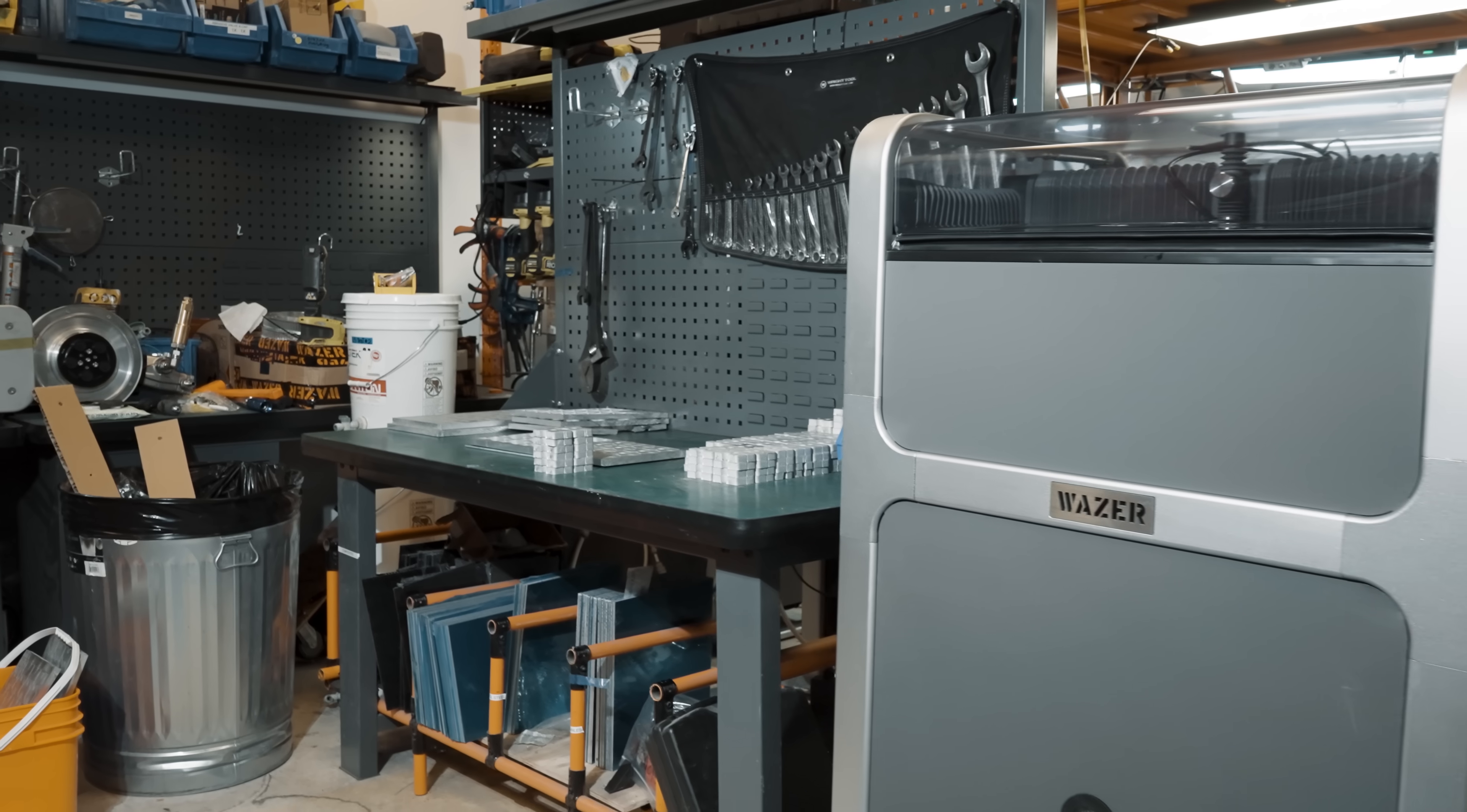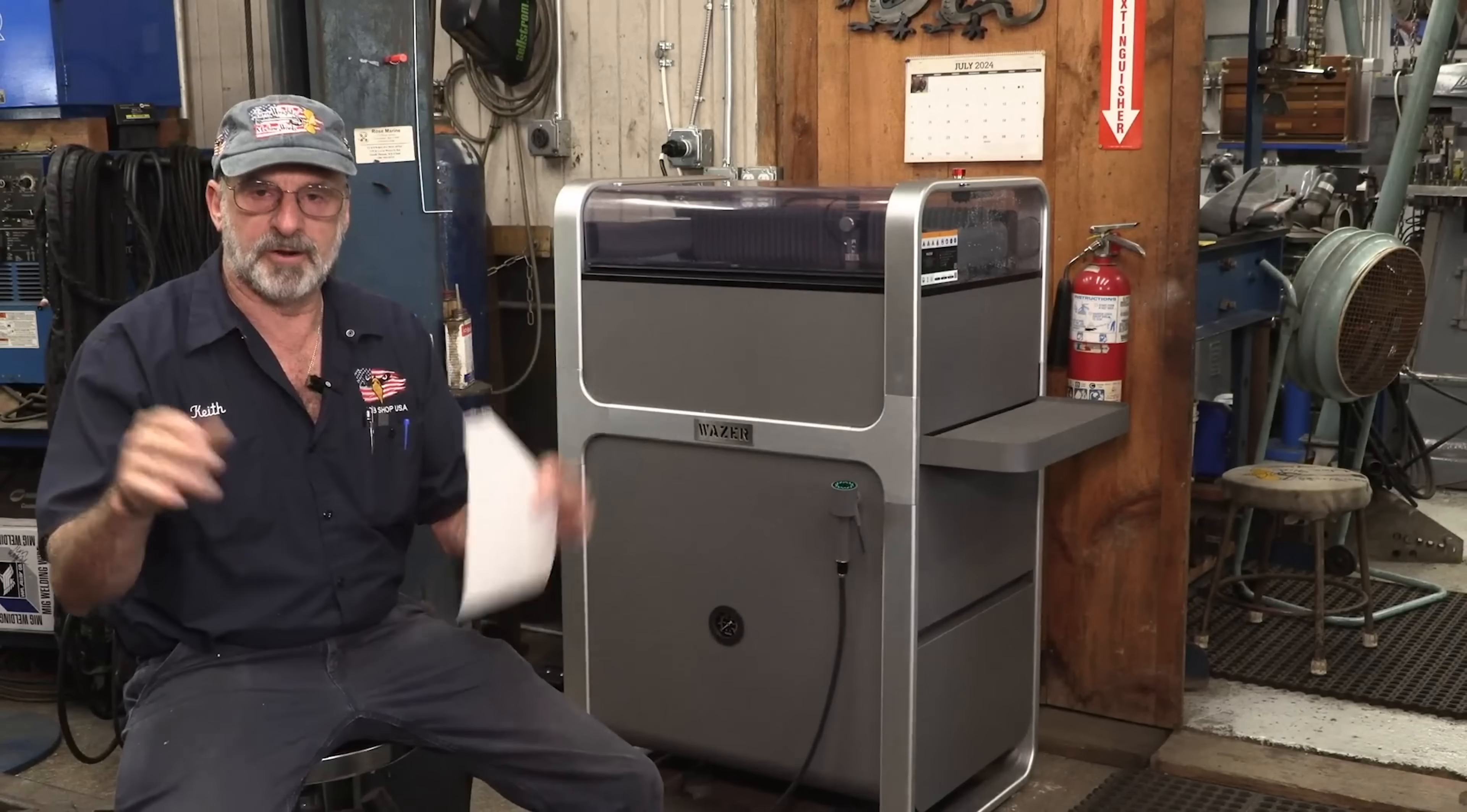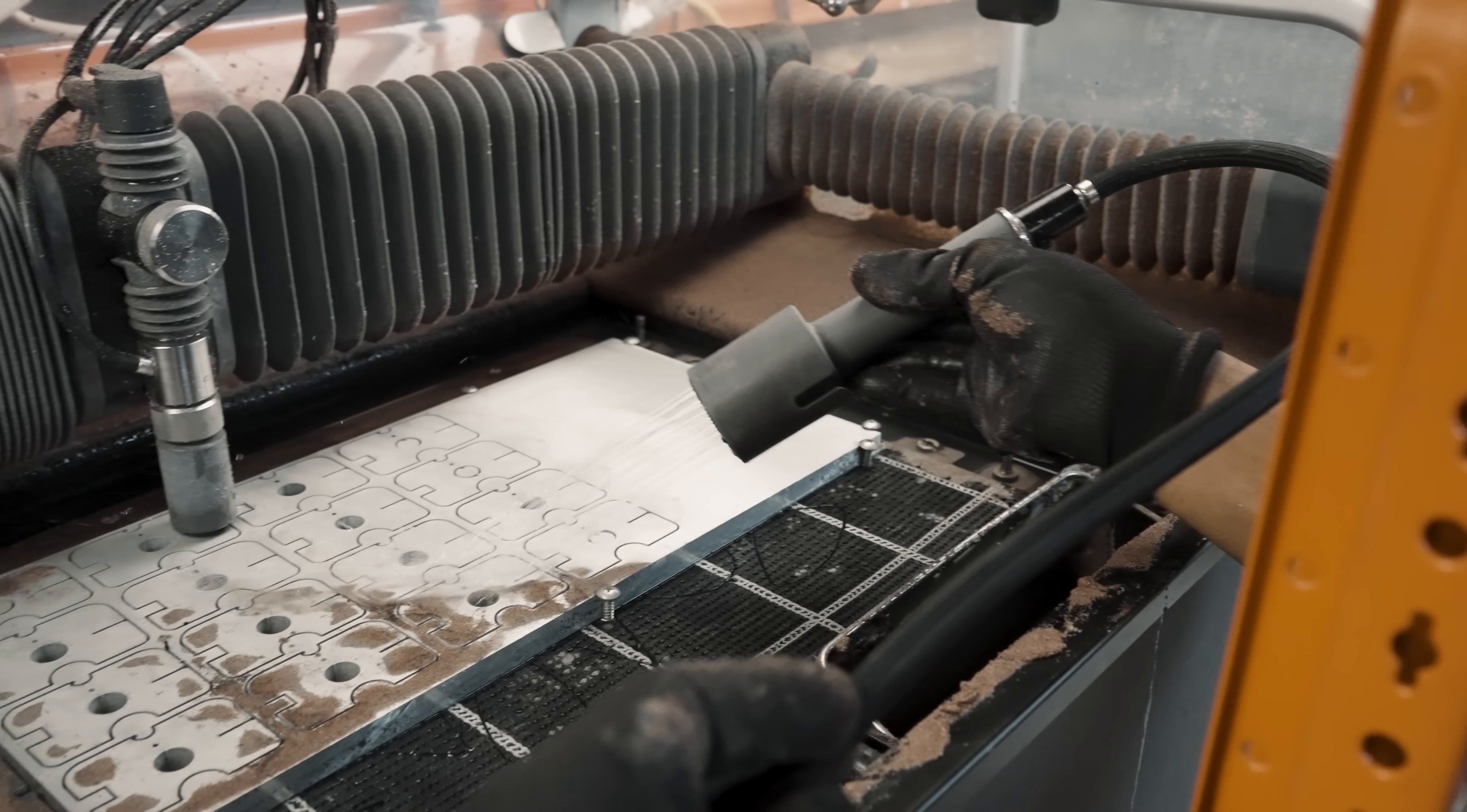Used anywhere. Wazer Pro works in any shop without any special infrastructure, utilizing standard 220-volt single-phase power and regular tap water, and the small footprint means it can be wheeled into place and fits almost anywhere. The included sprayer is handy for washing parts down inside the tank, keeping your shop clean.